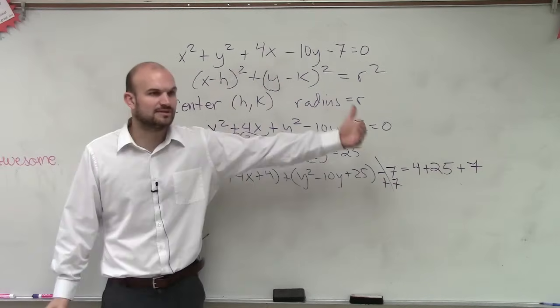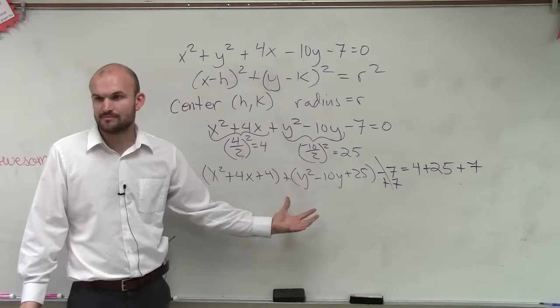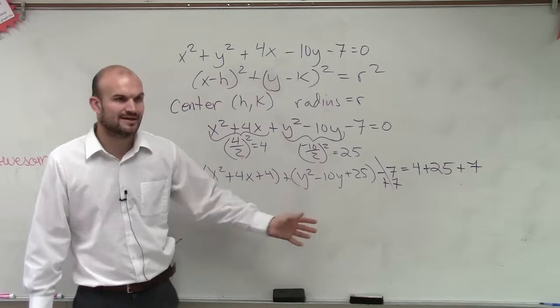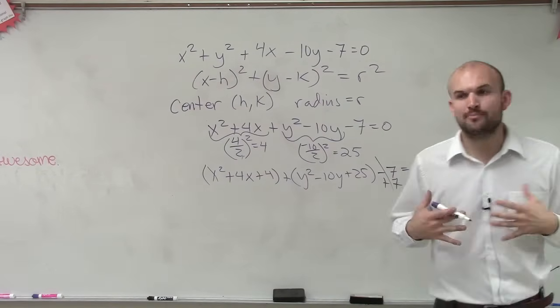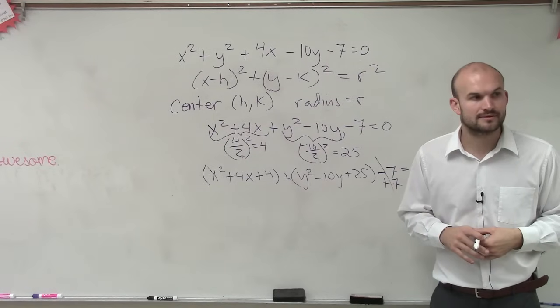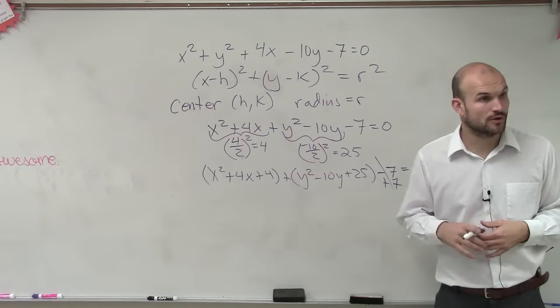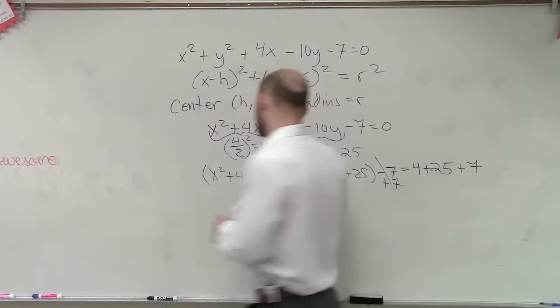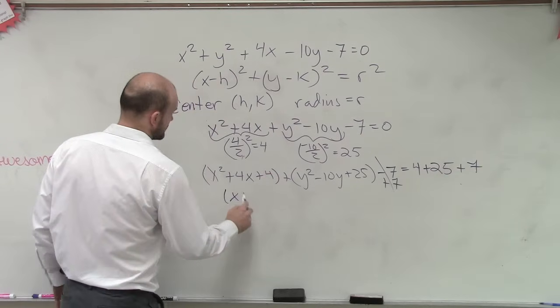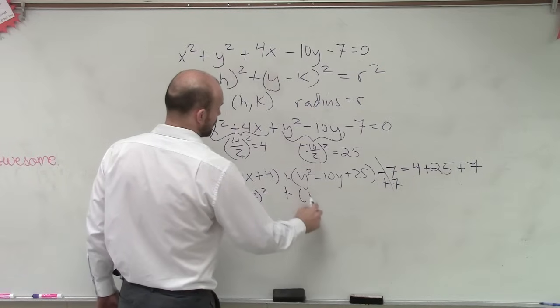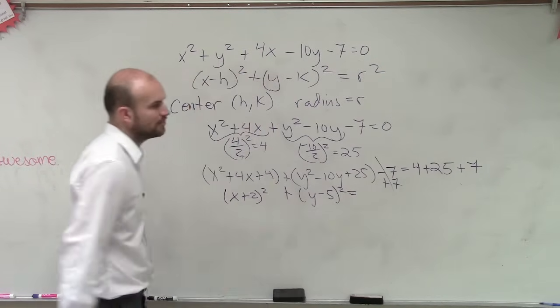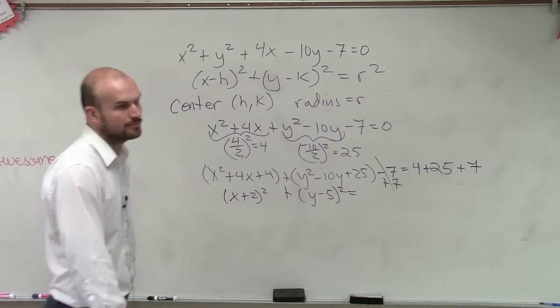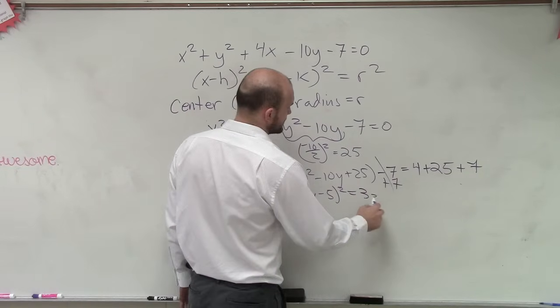So I'm going to get all the numbers to the other side, except for my x and my y's in the perfect square trinomials. Now, the whole reason why we complete the square is one, to create a perfect square trinomial, and then two, to be able to create a binomial squared. So here, we're going to have x plus 2 squared plus y minus 5 squared equals 4 plus 25 is 29, plus 7 is going to be 36.